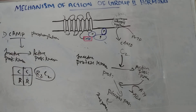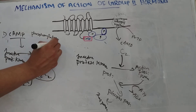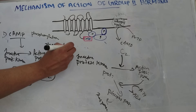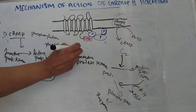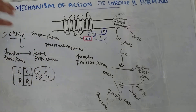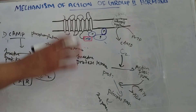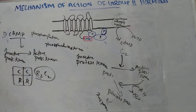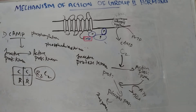After this, the enzyme phosphodiesterase inactivates the cyclic AMP and the cell's response is turned off. Then new hormones will bind to the receptors and the cycle continues. That is the mechanism of action in the case of second messenger cyclic AMP.